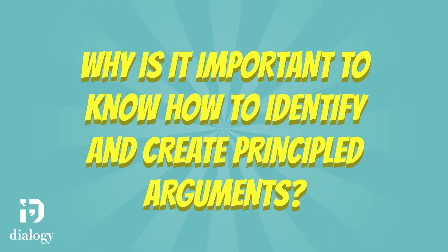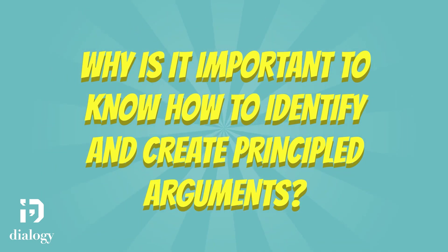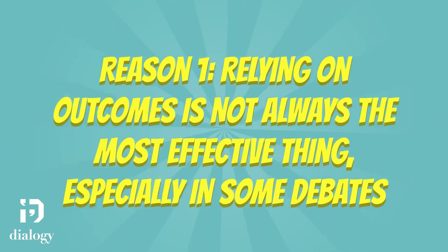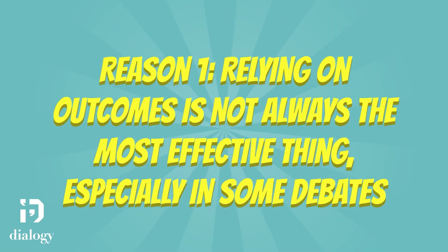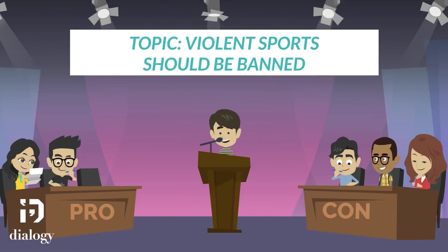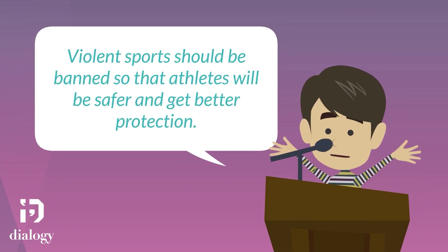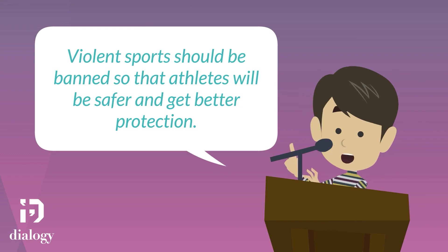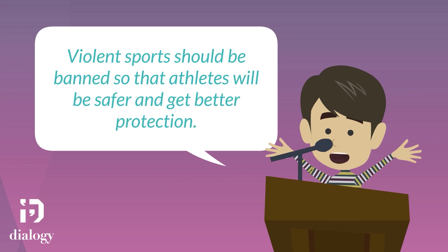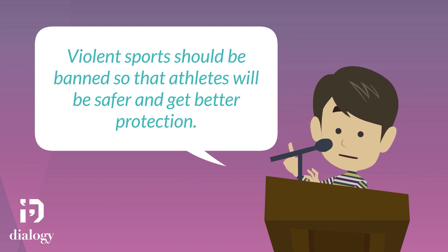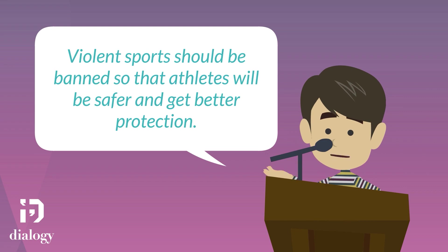First of all, why is it important to know how to identify and create principled arguments? For one, relying on outcomes is not always the most effective thing, especially in some debates. For example, if we were on the con team on the topic 'violent sports should be banned,' it would be tough to argue against the pro idea of safety and protection of athletes, especially if you tried to prove a practical outcome on your side as well. If we want to prove that your side also protects people, we need to find another way to do it. It might be better to launch an argument about principles instead.